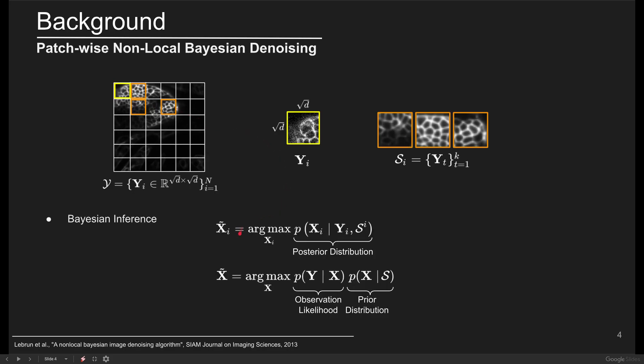In the Bayesian reasoning framework, the optimal denoised patch denoted here by X tilde is the one maximizing the posterior distribution conditioned by the noisy patch and the set of nearest patches. With Bayes' rule, we can rewrite the posterior as the product of observation likelihood and the prior distribution.